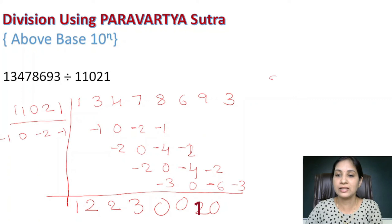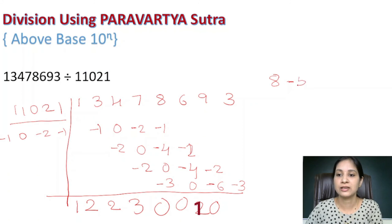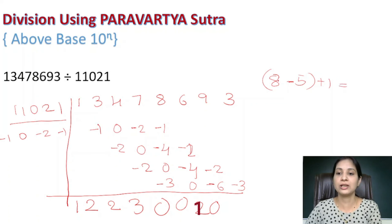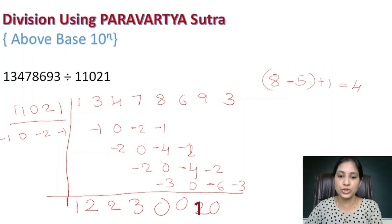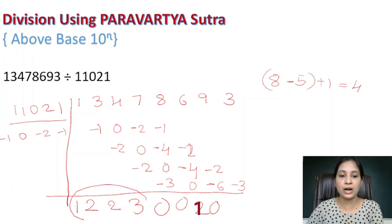The dividend has 8 digits and the divisor has 5 digits. Using the formula: 8 minus 5 plus 1 equals 4 digits in the quotient. Counting from the left: 1, 2, 3, 4 — so 1223 is the quotient part, and the remaining digits 0010 form the remainder of 10.